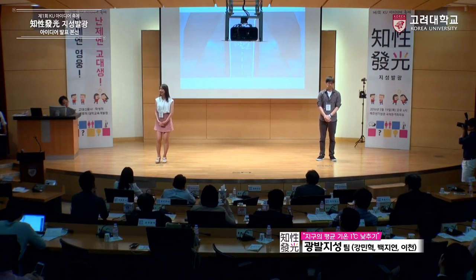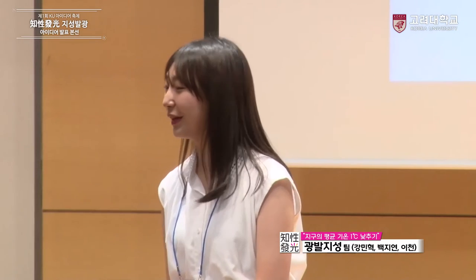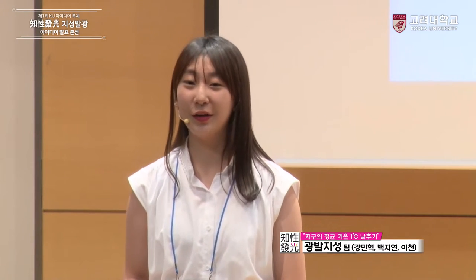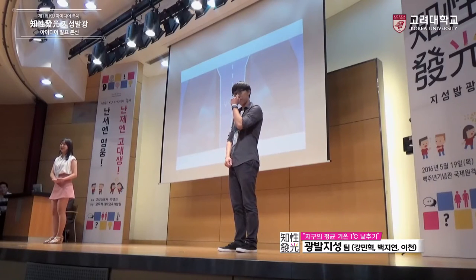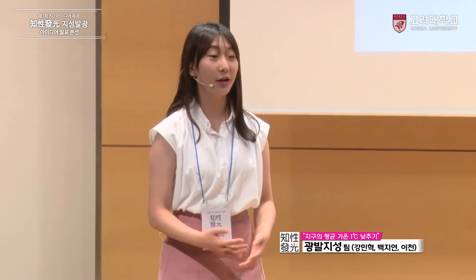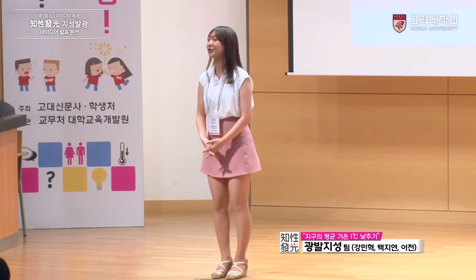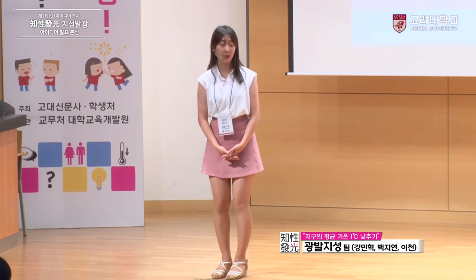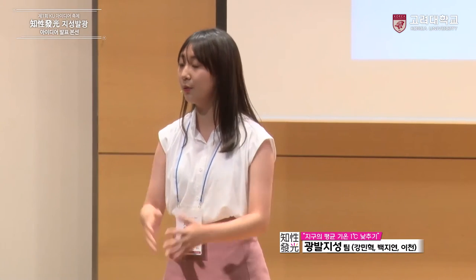저희가 제안하는 대도시형 필로티 프로젝트는 크게 세 가지로 이루어져 있습니다. 먼저 첫 번째는 필로티 구조 법제화입니다. 오늘 날씨 되게 더웠죠? 관중석을 보니까 긴 바지를 입고 계신 분들도 계시지만 저처럼 짧은 치마나 짧은 반바지를 입으신 분들도 굉장히 많이 보입니다. 단순히 길이가 조금 짧아졌을 뿐인데도 우리가 느끼는 온도는 이만큼 낮아졌기 때문입니다. 이 원리는 똑같이 건물에도 적용됩니다. 필로티 구조라 함은 1층을 실제 공간으로 사용하는 것이 아니라 단순히 기둥만 남겨두고 그 공간은 비워둔 채, 그 위층부터 실제 공간으로 사용하는 것을 말합니다.